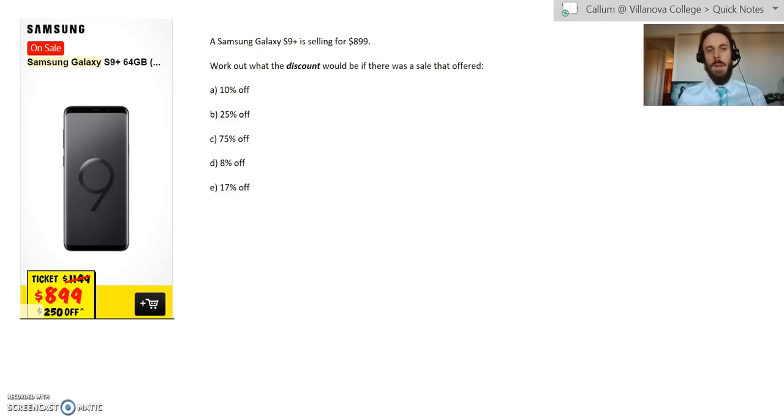So you can see on the screen I've just written down there a Samsung Galaxy S9 Plus is selling for $899. I just snipped that from the JB website and the question says work out what the discount would be if there was a sale that offered 10%, 25%, 75%, 8%, and 17%. A lot of people have been asking myself and Miss Lee for help on the ones like D and E.